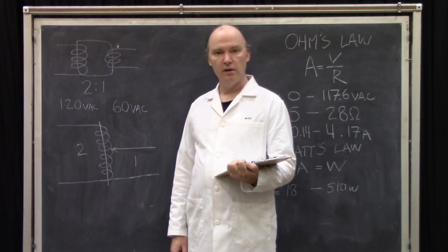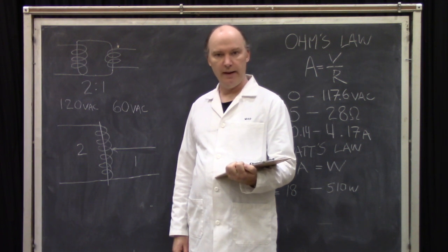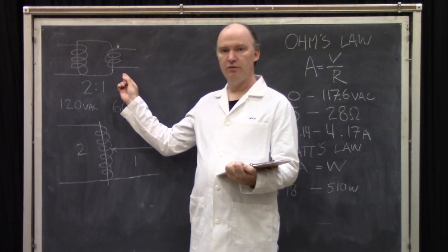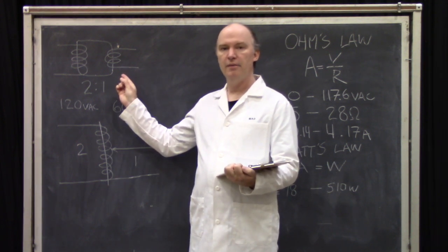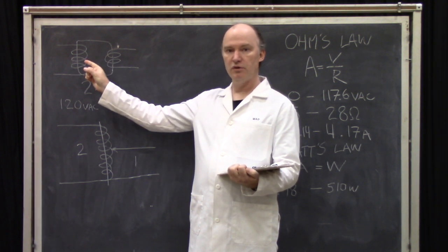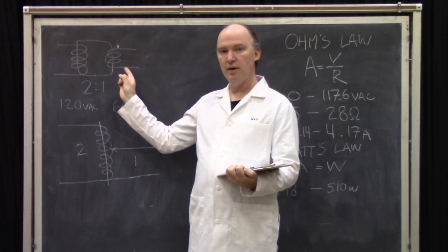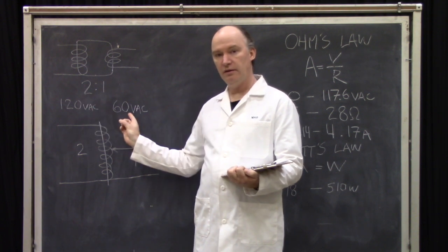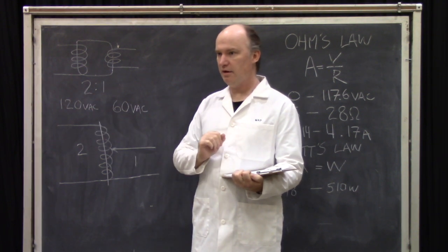An auto transformer is a transformer with a single winding. In an ordinary transformer, you have two windings around a common core. The ratio of the number of windings on one side and the number of windings on the other determines the ratio of the voltage in and the voltage out. Only AC though.